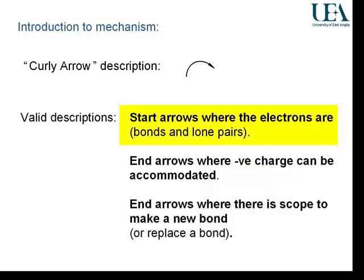The arrows start where the electrons are. They end where negative charge can be well accommodated. Or, they end at a position in the molecule where there's a possibility to change the bonding in a further way.